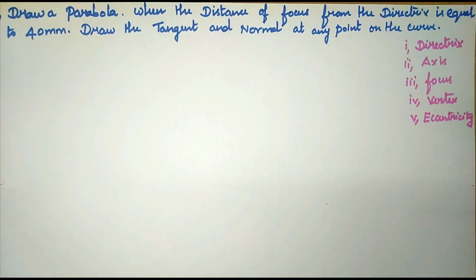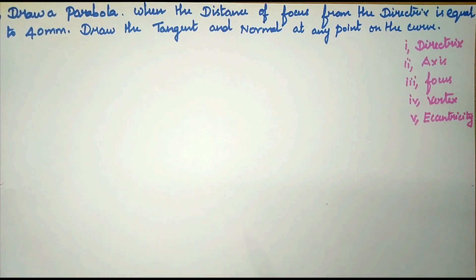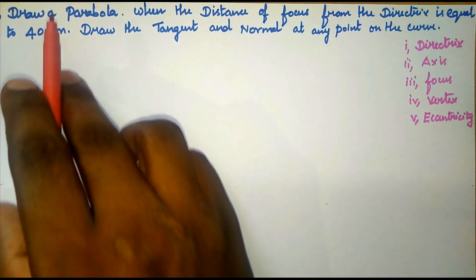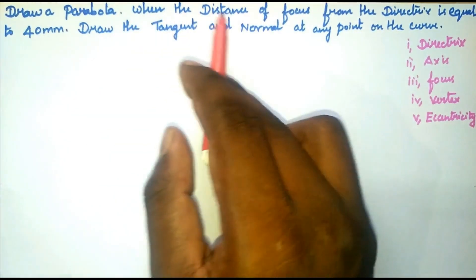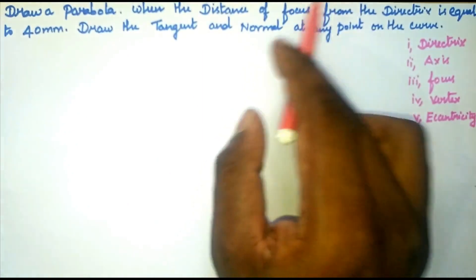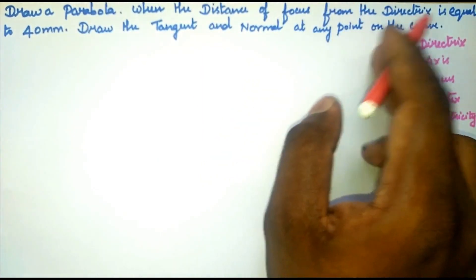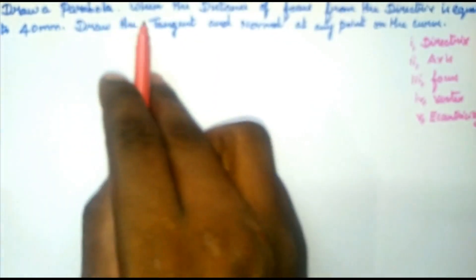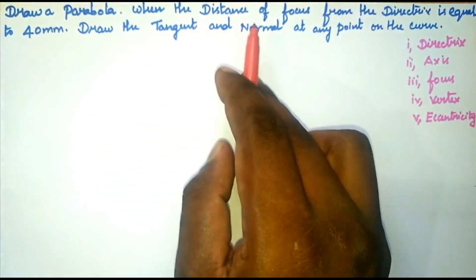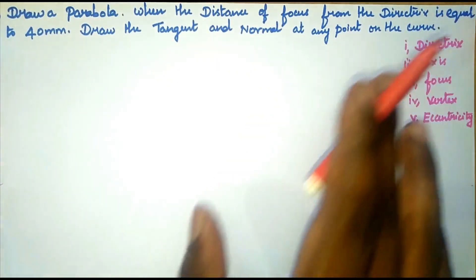Hello everyone, welcome to Jazz Talks. In this video, we are going to draw a parabola curve in engineering drawing. So first, read the question: draw a parabola when the distance of focus from the directrix is equal to 40 mm, and draw the tangent and normal at any point on the curve.